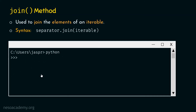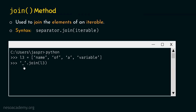Let's move on to the next example. This time we provide l3 equal to a list with four items: 'name', 'of', 'a', 'variable'. The separator this time is underscore. Typing underscore dot join of l3 gives us the string 'name_of_a_variable', because the underscores come between each of these strings.